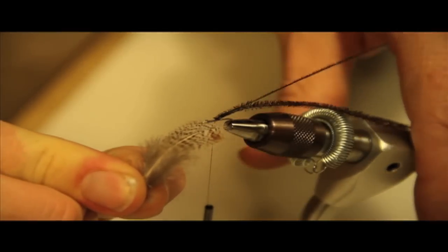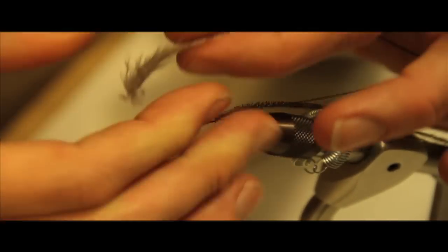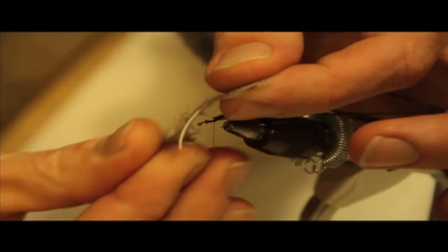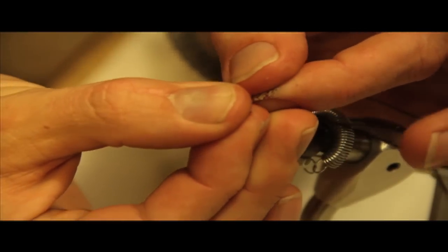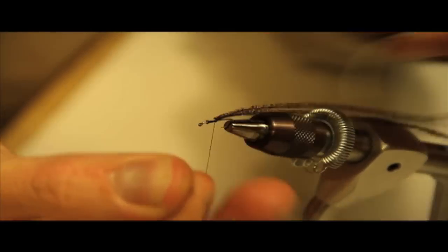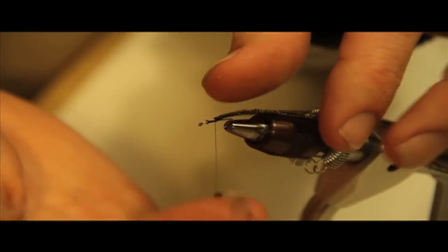For the next step we're going to take some partridge. And instead of wrapping the partridge, we're going to strip the hackles off the side. And I'm going to peel about a dozen or so fibers right off the stem, just like so.